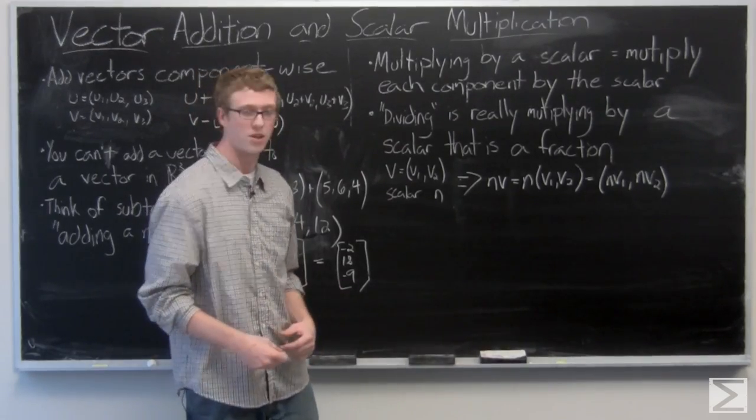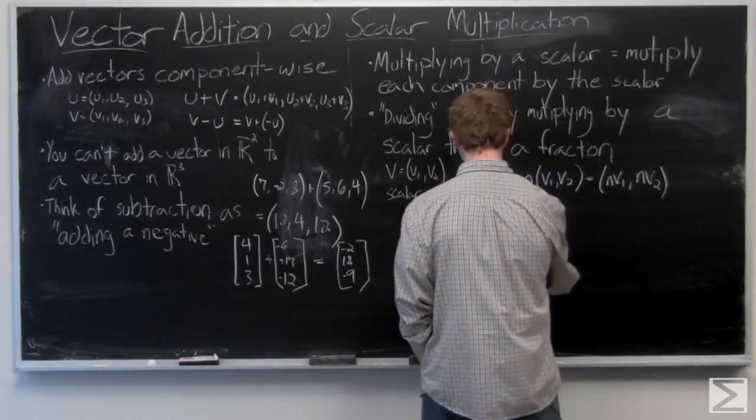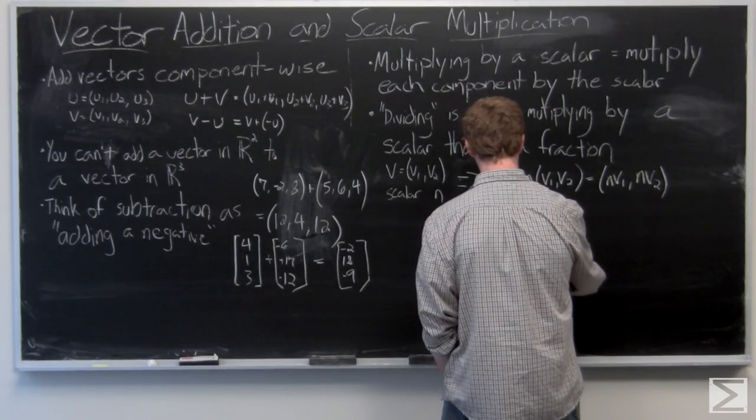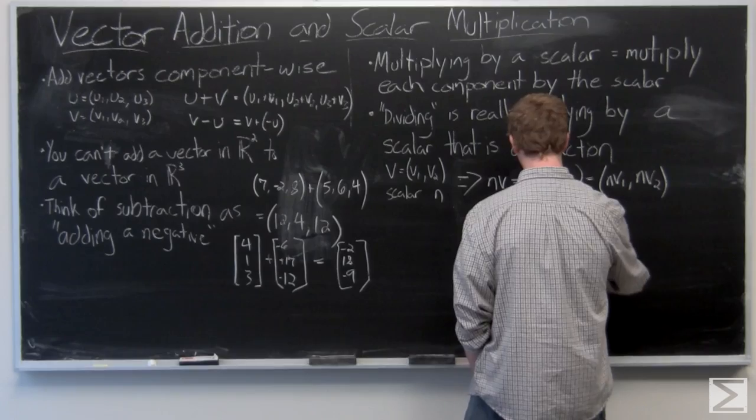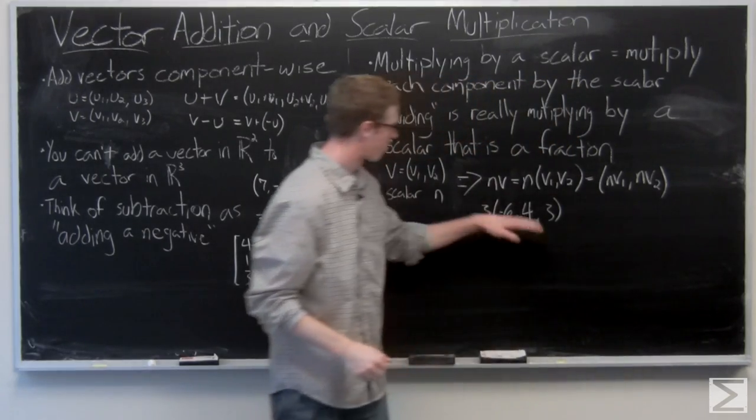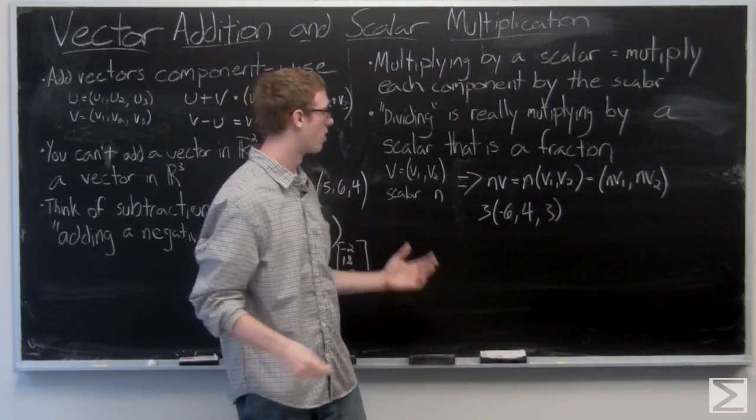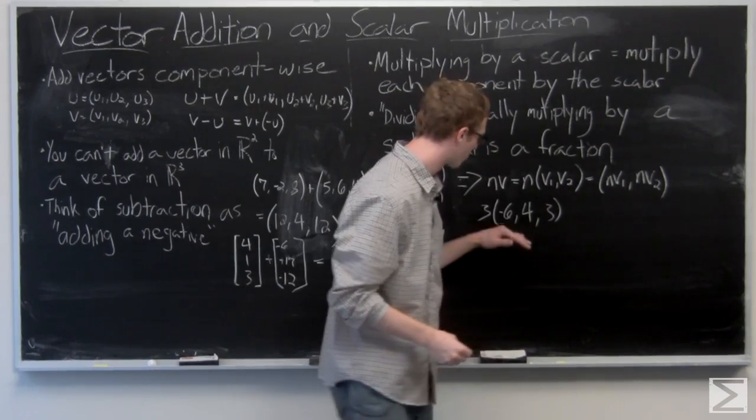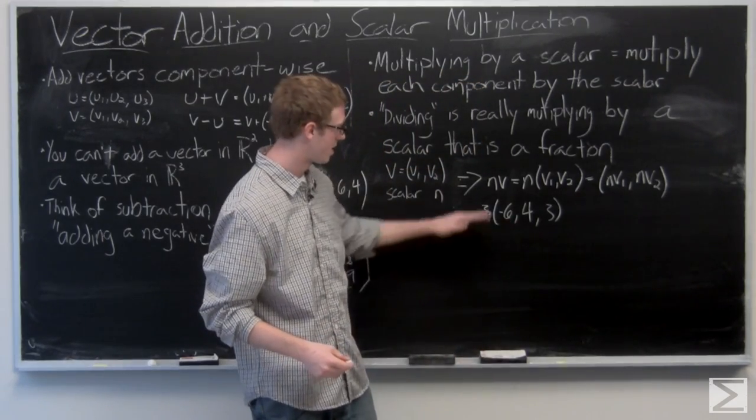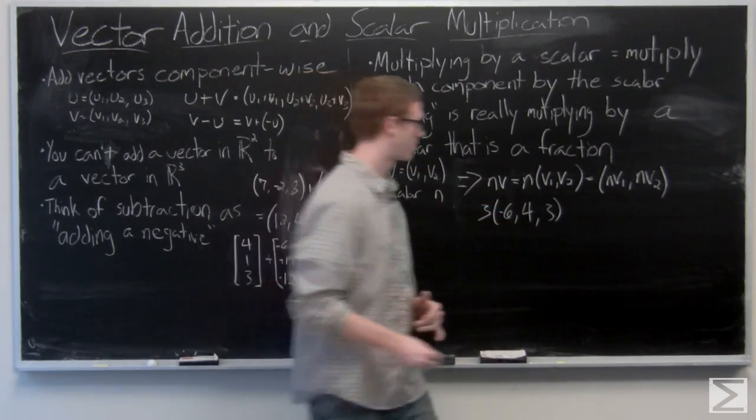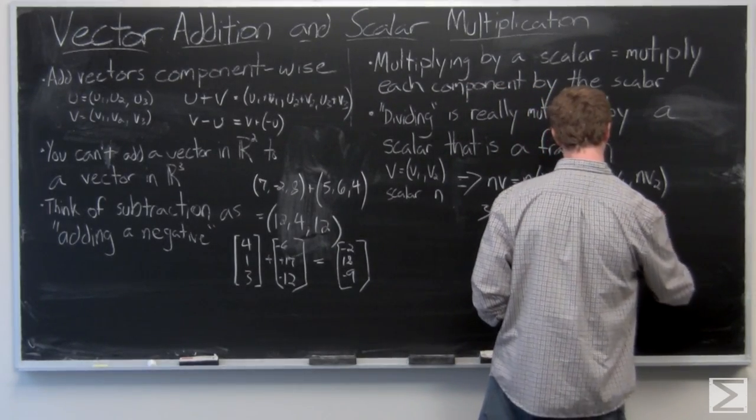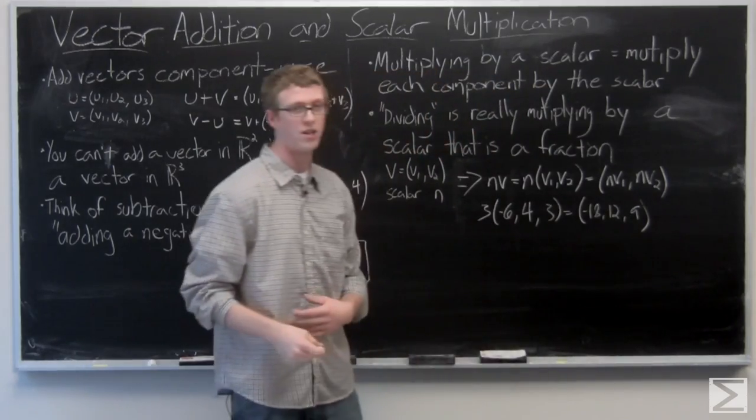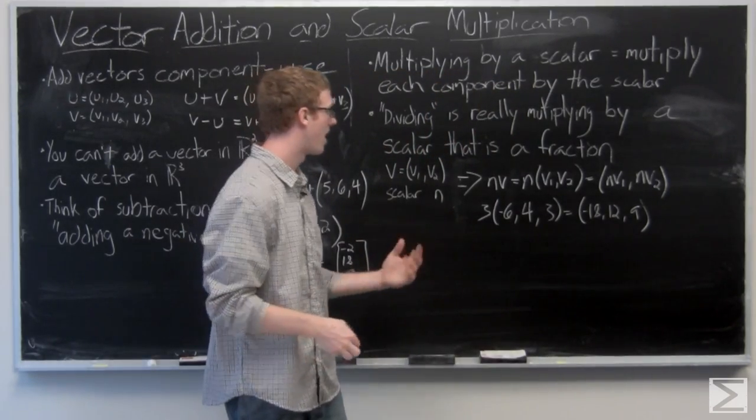We'll look at a quick couple examples here. So 3 times the vector negative 6, 4, 3. Just make sure you're multiplying 3 times negative 6, 3 times 4, and 3 times 3. You'll result in vector negative 18, 12, 9.